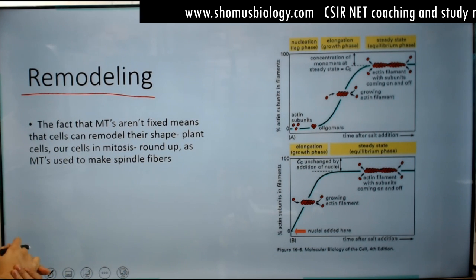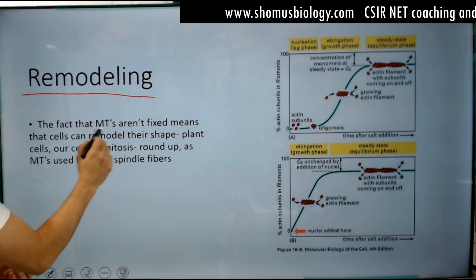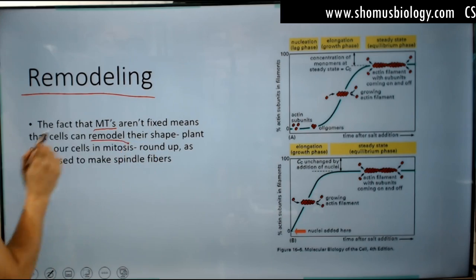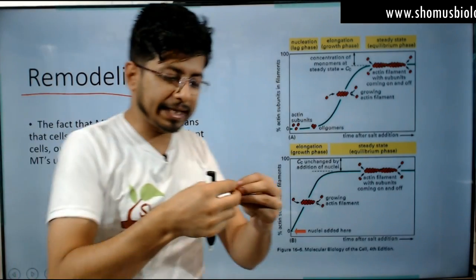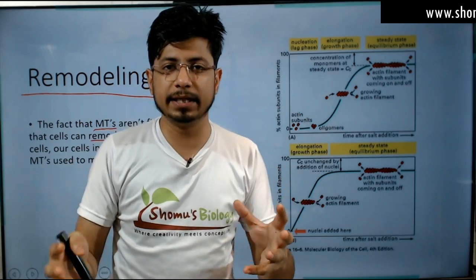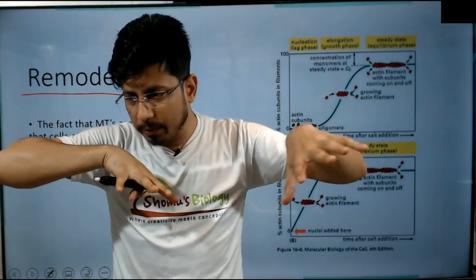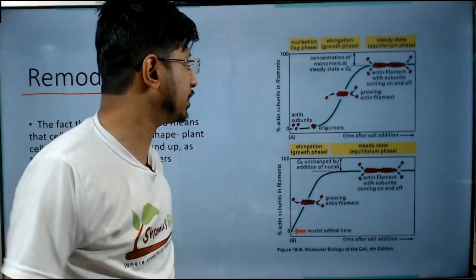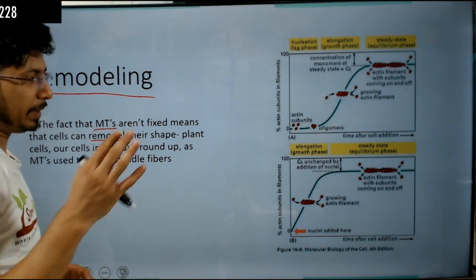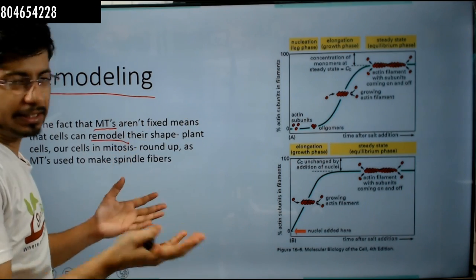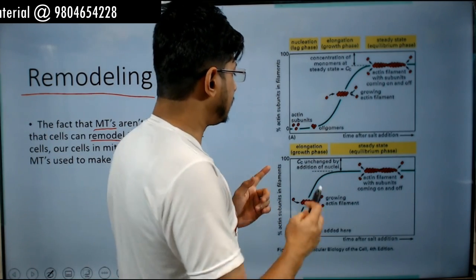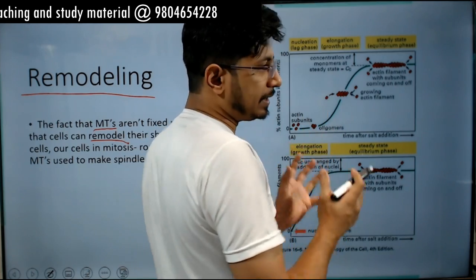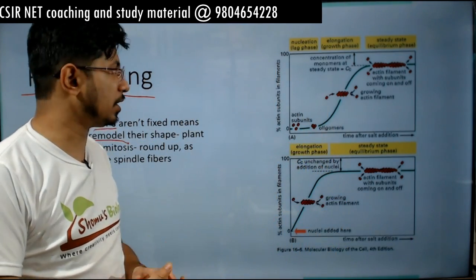The fact that microtubules are not fixed means that cells can remodel their shape. Plant cells and other cells also remodel their shape because microtubules can grow and shrink from one end. If you have multiple microtubules, they can grow and shrink in different directions, allowing the cell to change its shape.